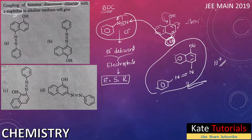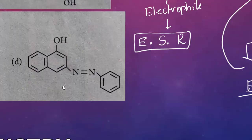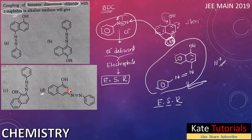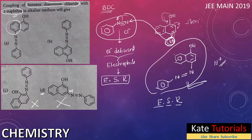Looking at the options A, B, C, D: Option D shows attack at the meta position — that is wrong. Option C shows attack at the ortho position — also wrong. Option A shows attack on the other benzene ring — that can't happen because it is not electron-rich compared to the naphthol ring, which is electron-rich. The para position is electron-rich and the electron-deficient diazo molecule will react there. So option B is the correct answer.